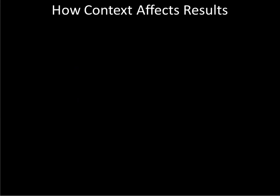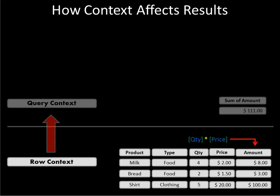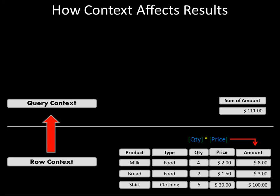It can get a little more complex when we're writing calculations, so let's look at how these contexts are applied. For the row context, we have our base rows, and we've added a calculated column — quantity times price — giving us 4 times 2 equals 8, and so on. That amount field becomes part of the row context, so it's available for calculations. For the query context, we might select only the amount field, and PowerPivot would automatically create a measure called sum of amount and add them all up, yielding a sum of $111.